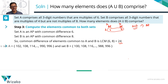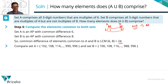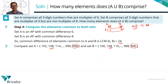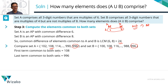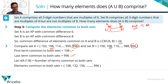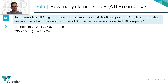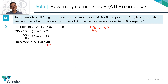Listing first few terms: Set A starts 102, 108, ...; Set B starts 100, 108, ... So 108 is the first term common to both sets. The last common term is 996. Using the AP formula with first term 108, last term 996, common difference 24: 996 = 108 + (n−1)×24. So 888 = 24×(n−1), giving n−1 = 37, thus n = 38. Number of terms common to both sets is 38.